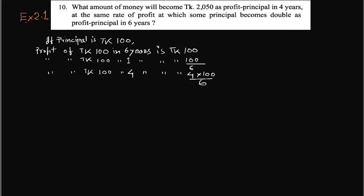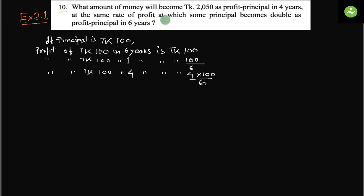Assalamu alaikum, greetings from Talent Upscale. Class 8 English version math, Exercise 2.1, number 10. What amount of money will become Taka 2050 as profit-principal in four years, at the same rate of profit at which some principal becomes double as profit-principal in six years? So we have to find out the amount of money, or the principal.